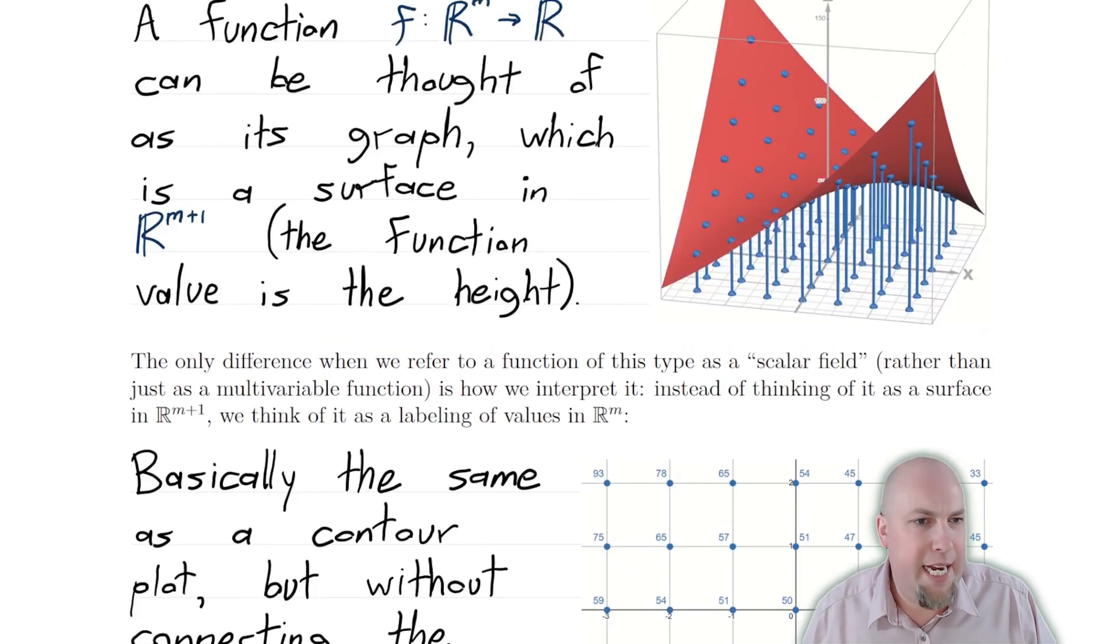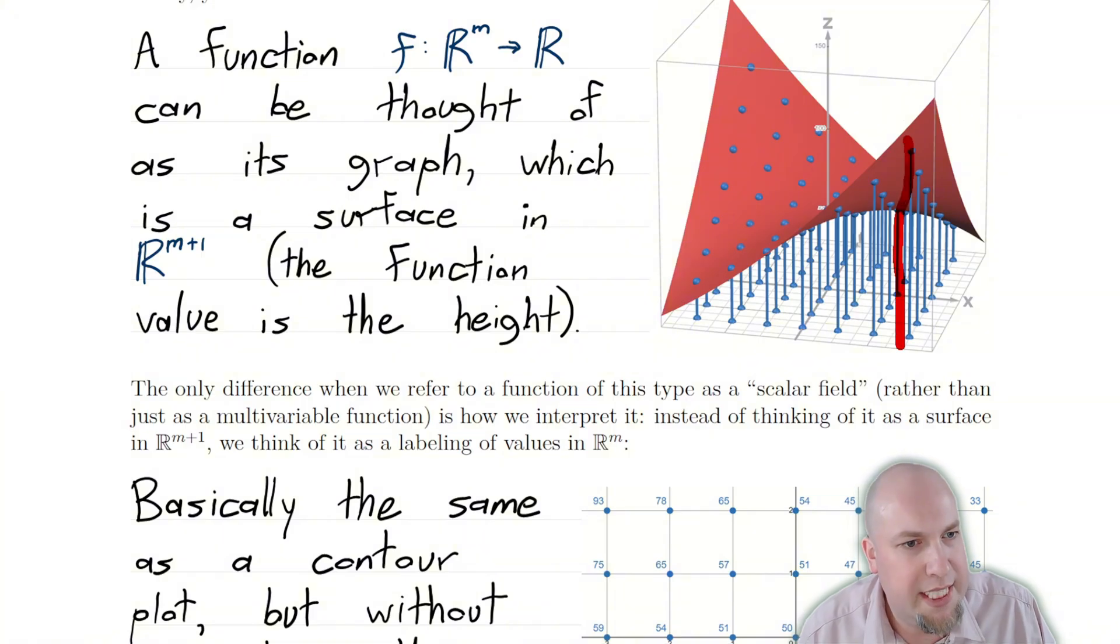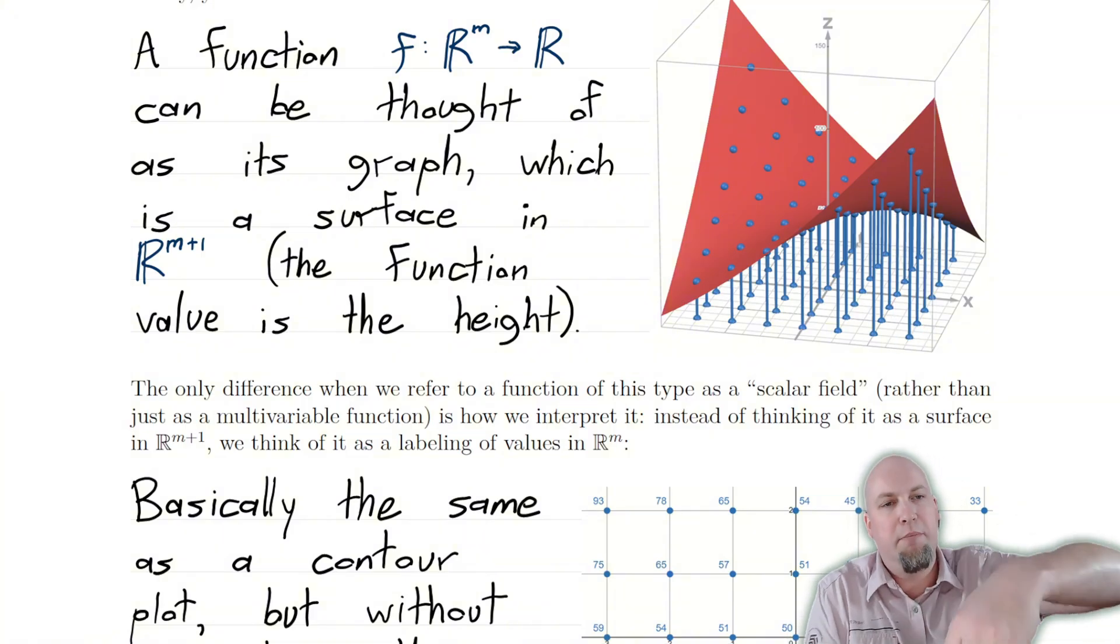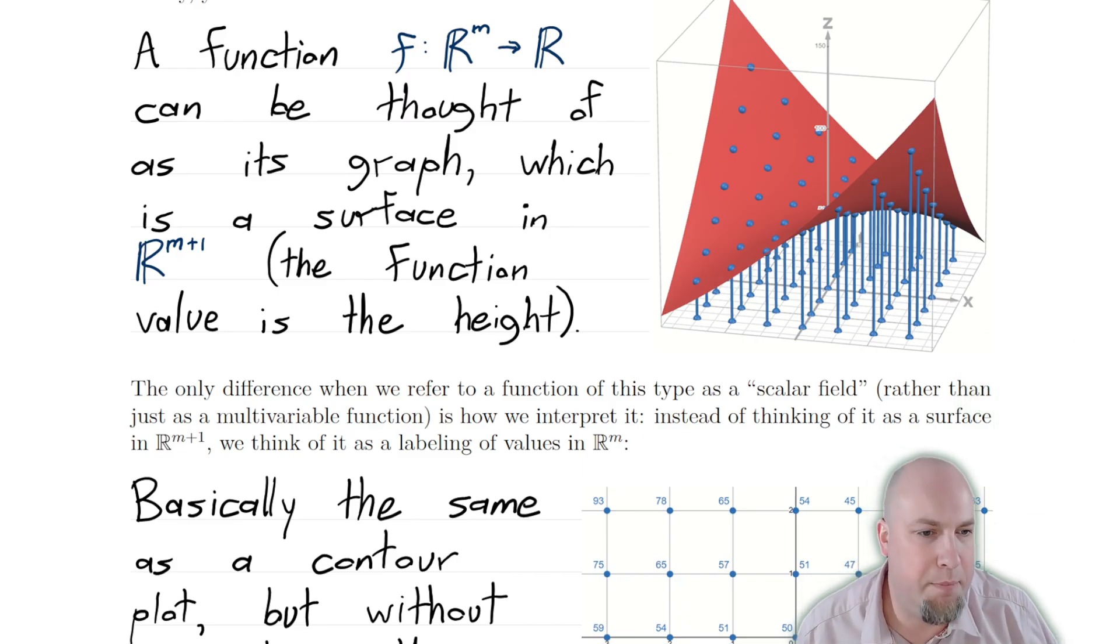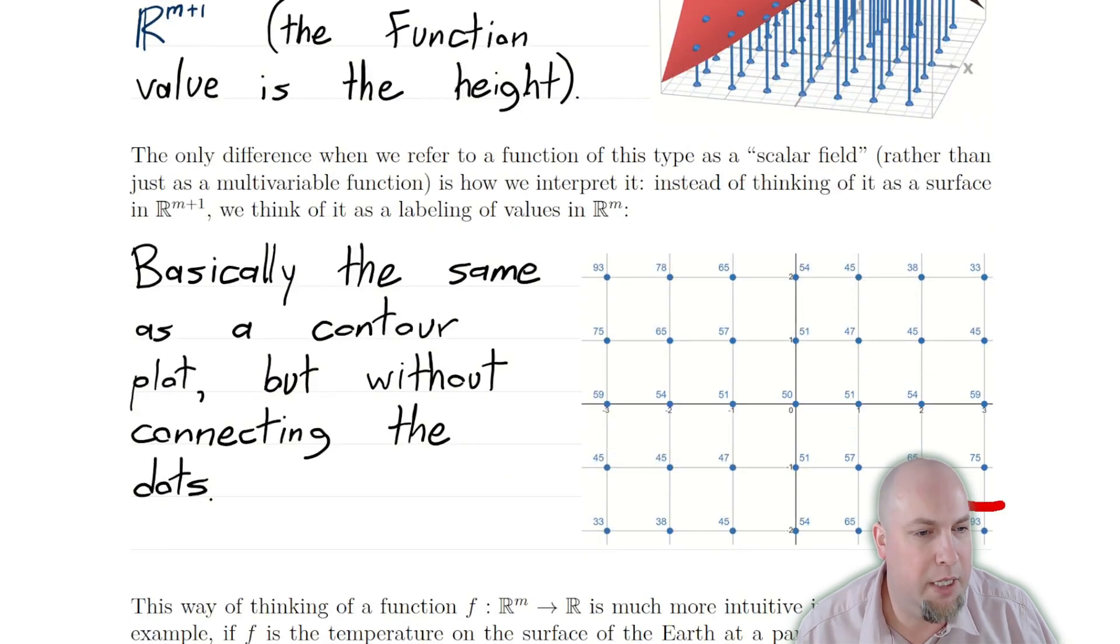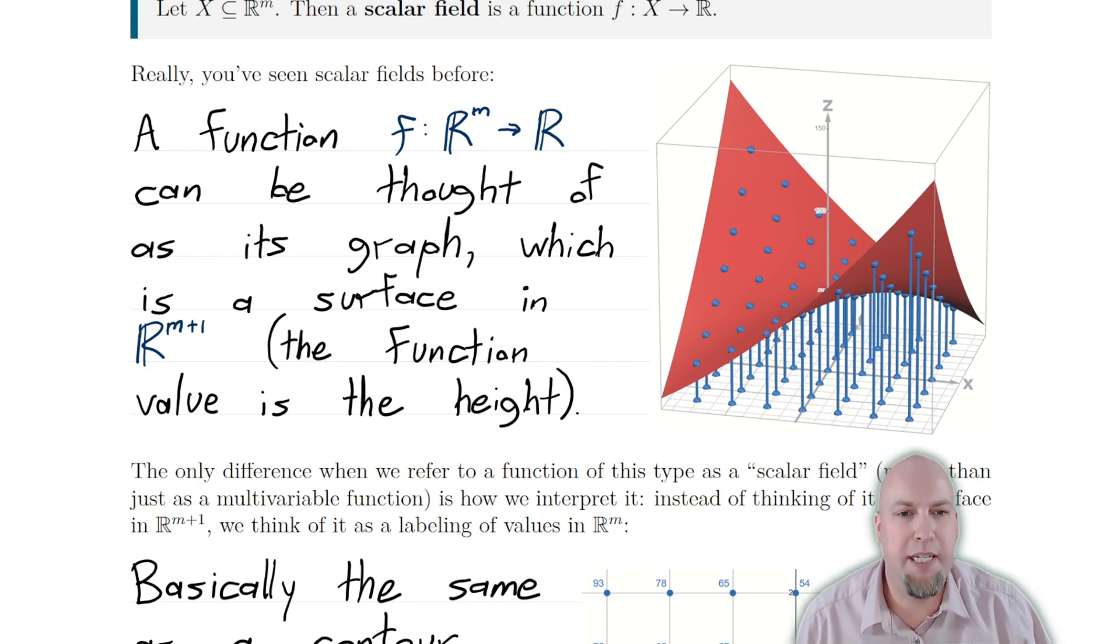This is the same as the graph method that we used up above. All that's happening is we're taking these vertical bars, these bars going from the floor up to the surface, and we're just saying, well, how high is that? How tall is that bar? That's the number that I'm going to place on that spot on the input grid. So it's just a way of compressing the visualization down to one smaller dimension.